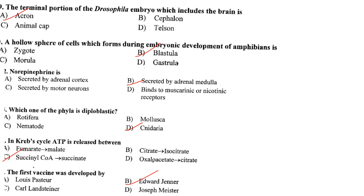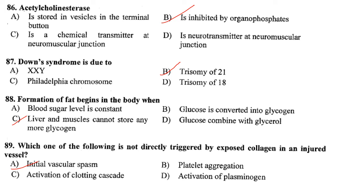The first vaccine was developed by Edward Jenner. Acetylcholinesterase is a cholinergic enzyme primarily found at post-synaptic neuromuscular junctions in muscles and nerves. It immediately hydrolyzes acetylcholine — a naturally occurring neurotransmitter — into acetic acid and choline. Organophosphates and carbamate esters can inhibit acetylcholinesterase by binding covalently to a serine residue in the enzyme's active site. Answer is option B.